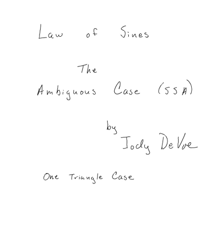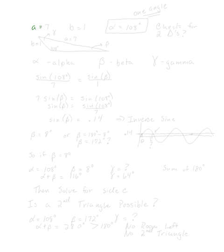The problem we're going to look at is A equals seven, B equals one, and angle A equals one hundred and eight degrees. Make sure your calculator is in degree mode. All of these problems and the triangle cases — the law of sines cases — they're all going to be in degree mode.